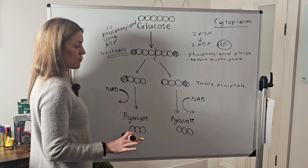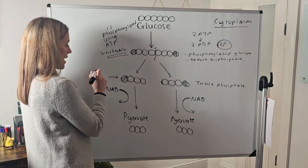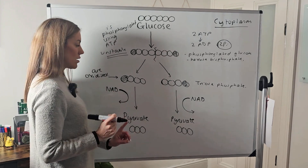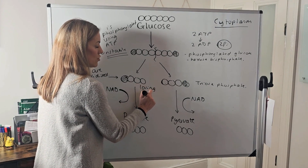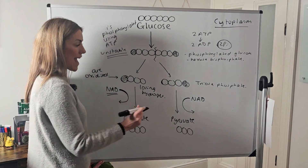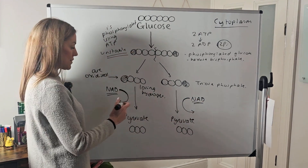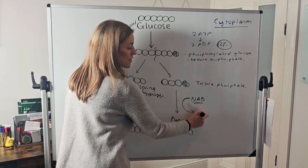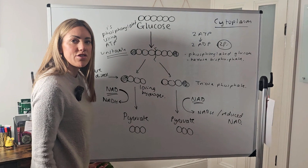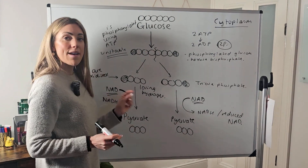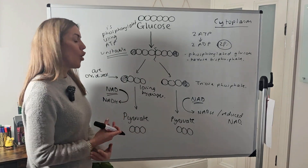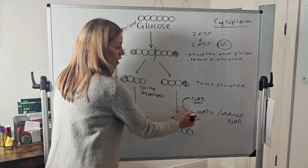The triose phosphates are then oxidized. Remember, oxidation is loss — when we say they're oxidized, they're losing hydrogen (dehydrogenated). That hydrogen is accepted by the coenzyme NAD, which gains hydrogen to form NADH, or reduced NAD. This step is really important for marking points: triose phosphate is oxidized and loses hydrogen; NAD is reduced and gains hydrogen, forming two molecules of NADH.